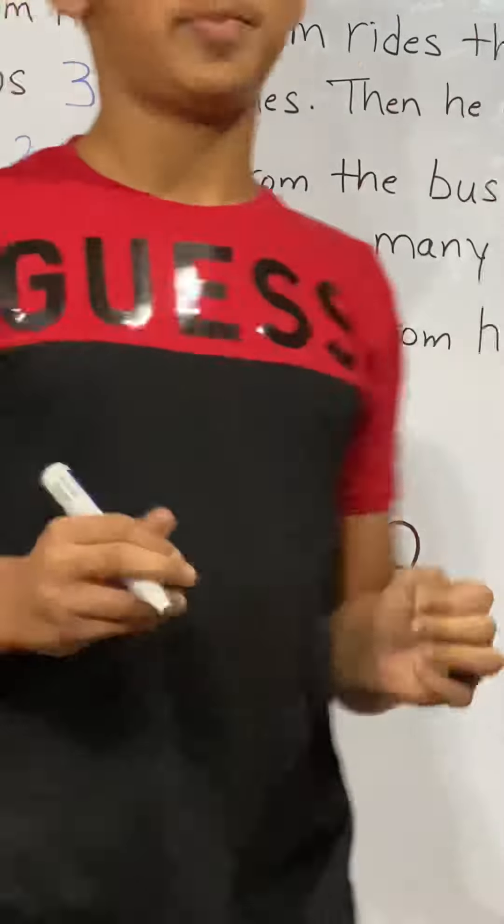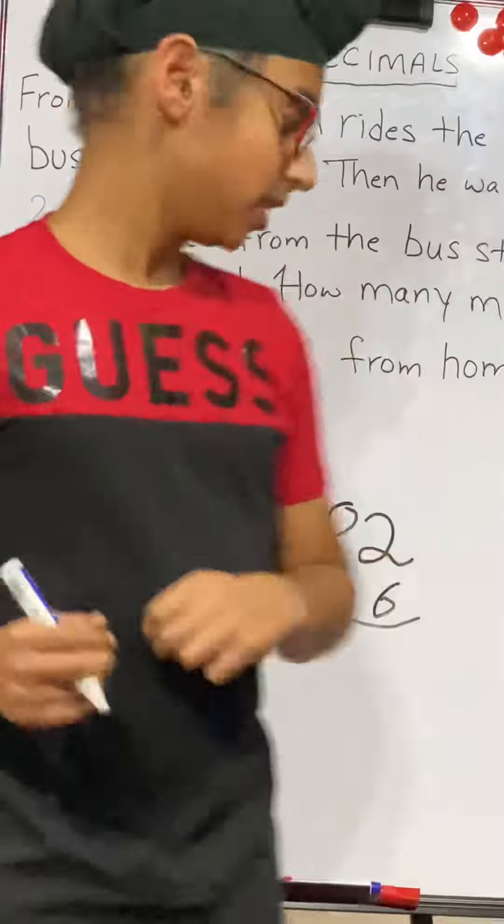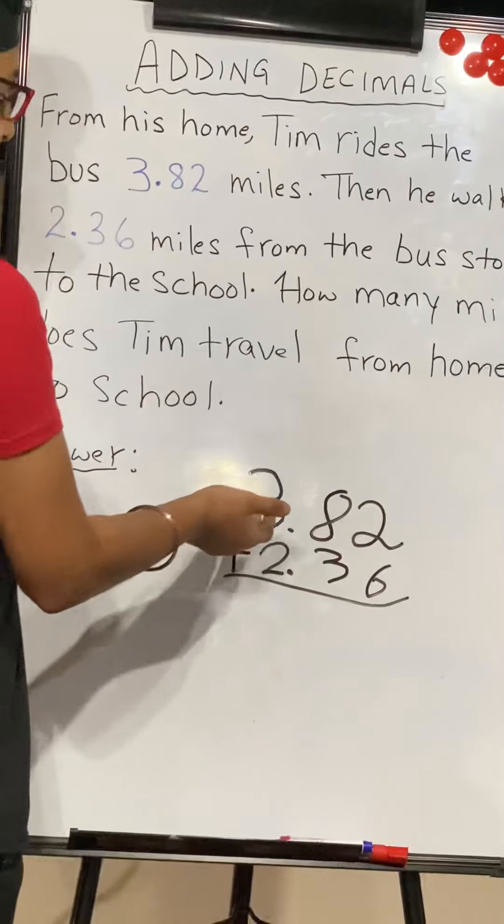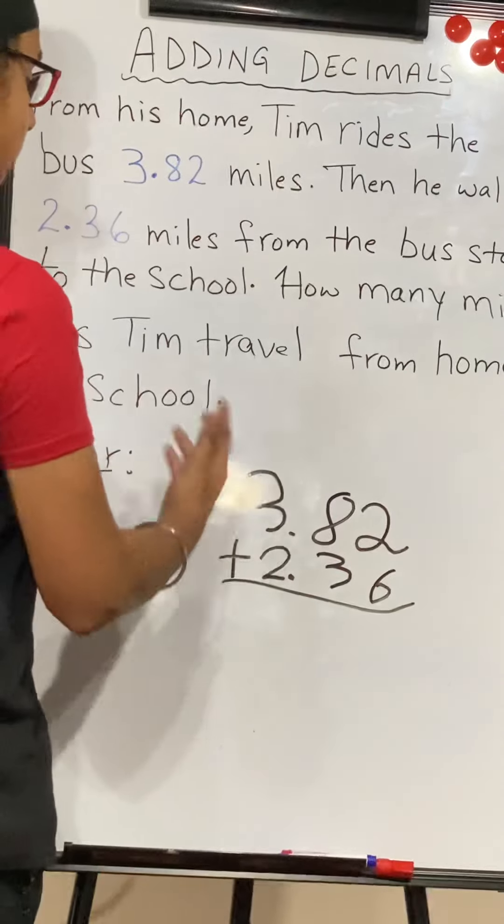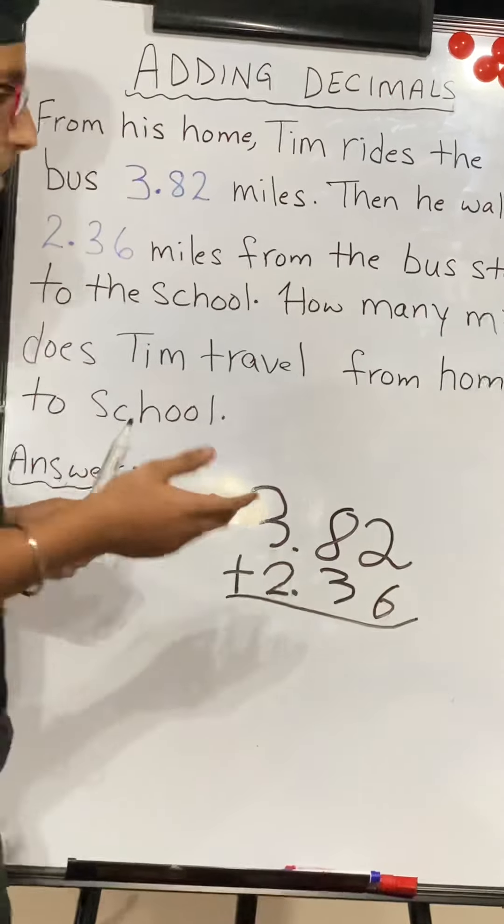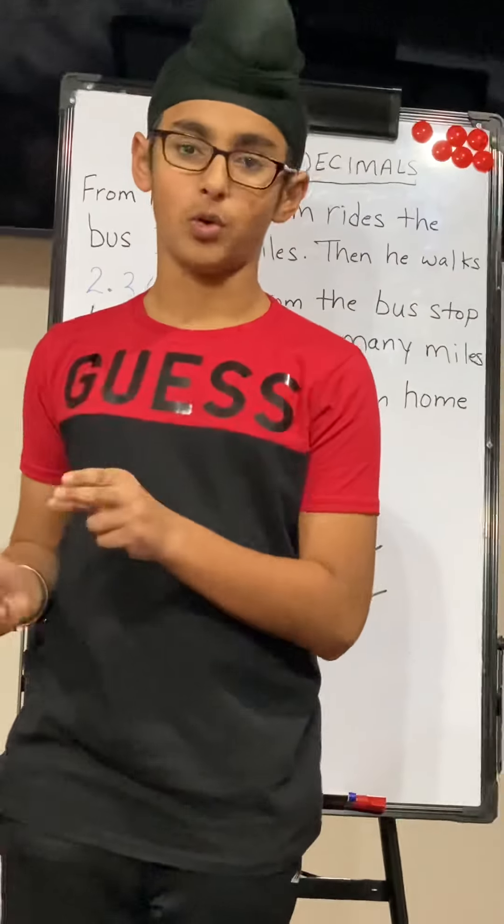When you're adding decimals, it's basically the same thing as adding numbers. Take this for example. Take this as 382 plus 236. It's going to be the same outcome. All you have to do is just add a decimal after the whole number.